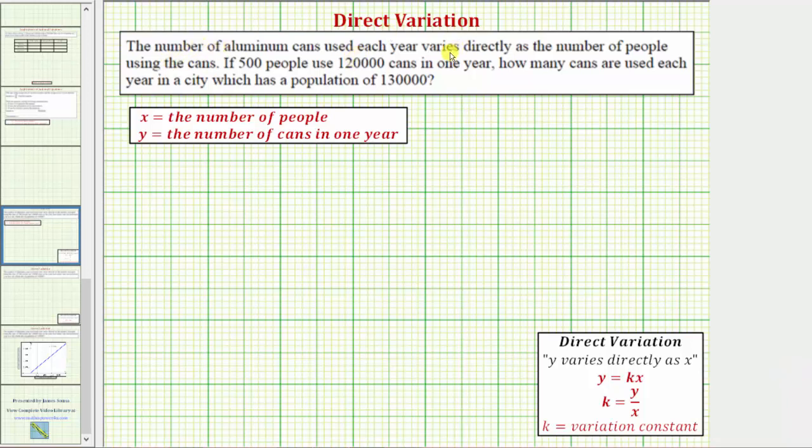The number of aluminum cans varies directly as the number of people using the cans. If 500 people use 120,000 cans in one year, how many cans are used each year in a city that has a population of 130,000?